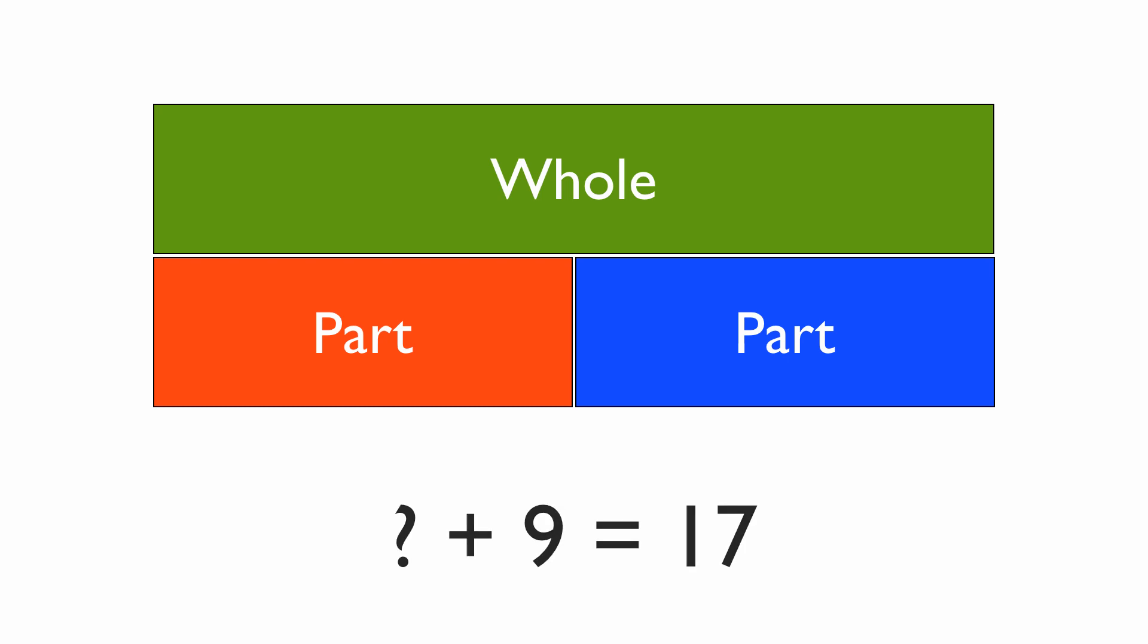So using take away, subtraction, to solve an addition problem. Here's the third type. Here we don't know the starting amount. It's something plus 9 equals 17. So we know that the total is going to be 17, the whole.